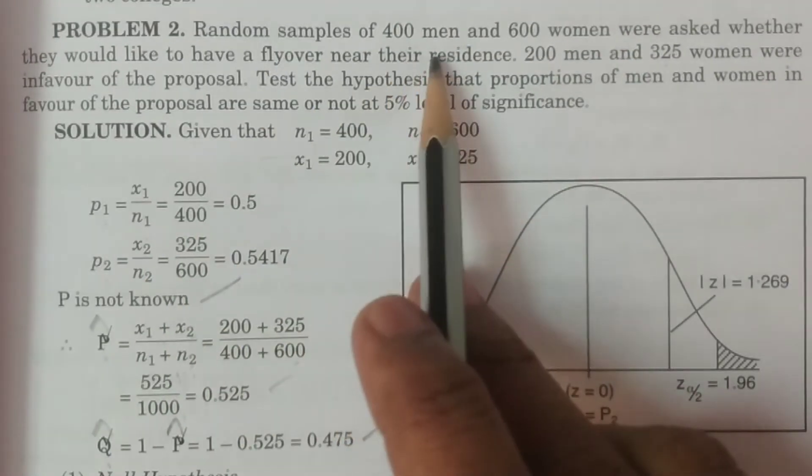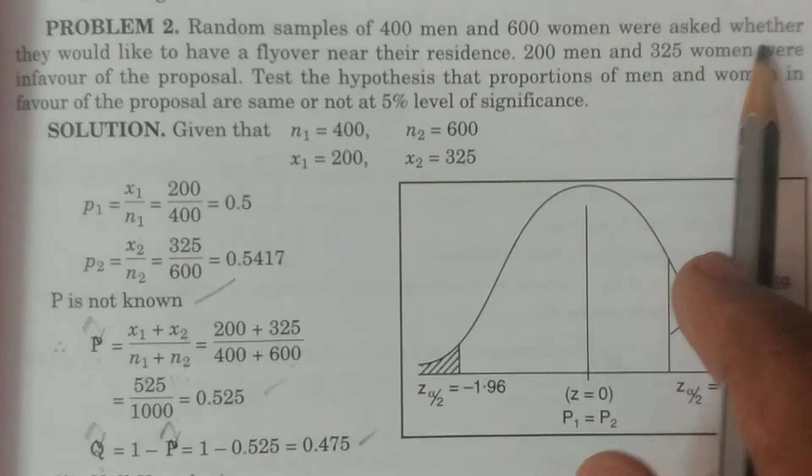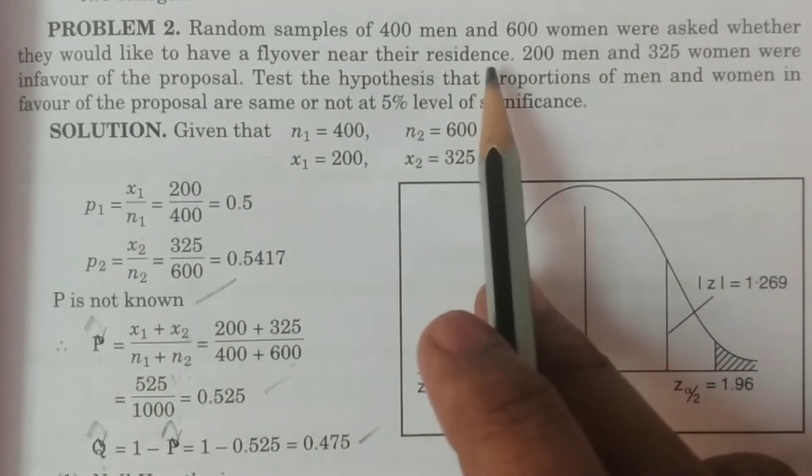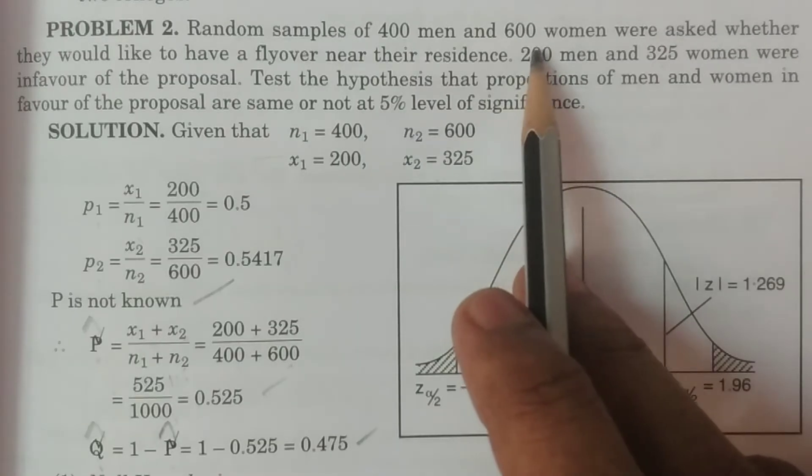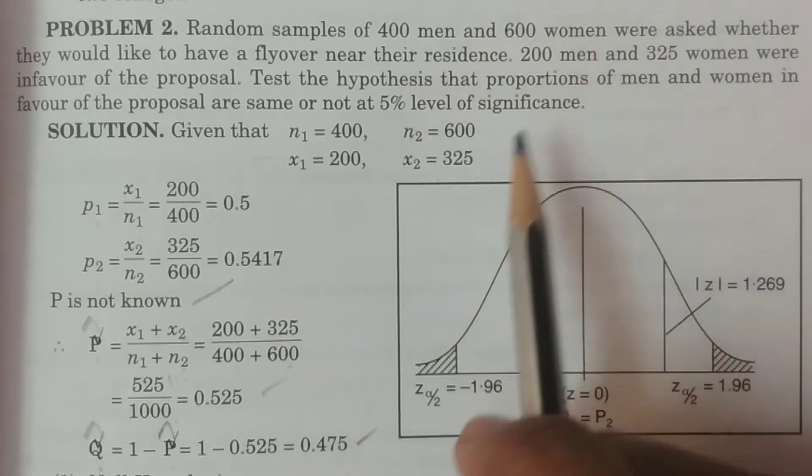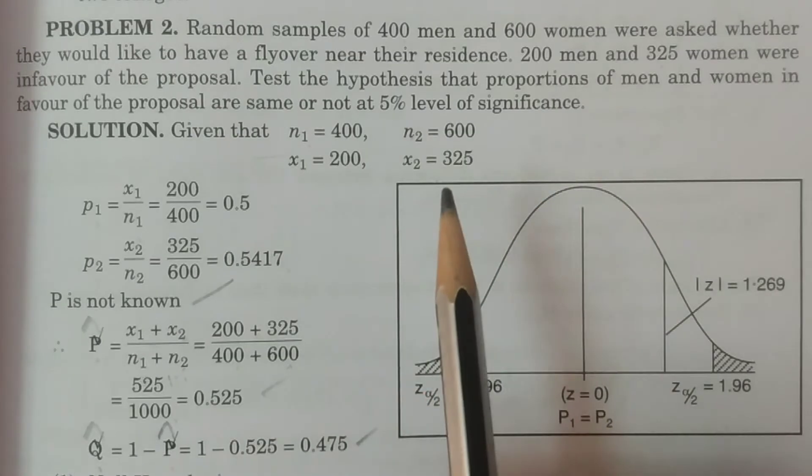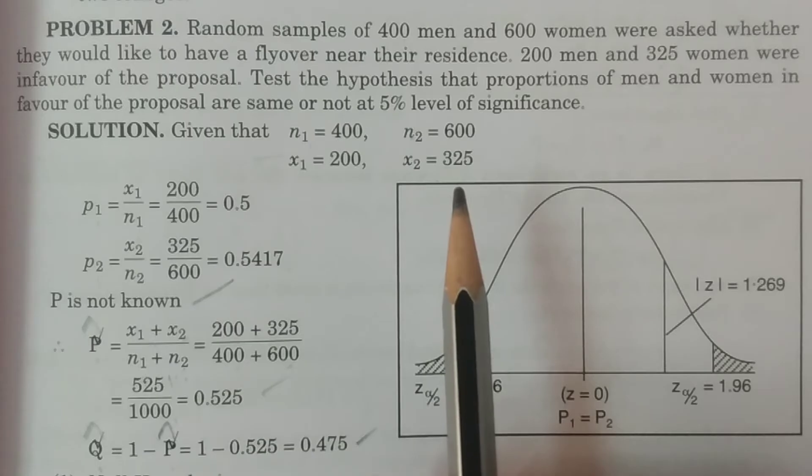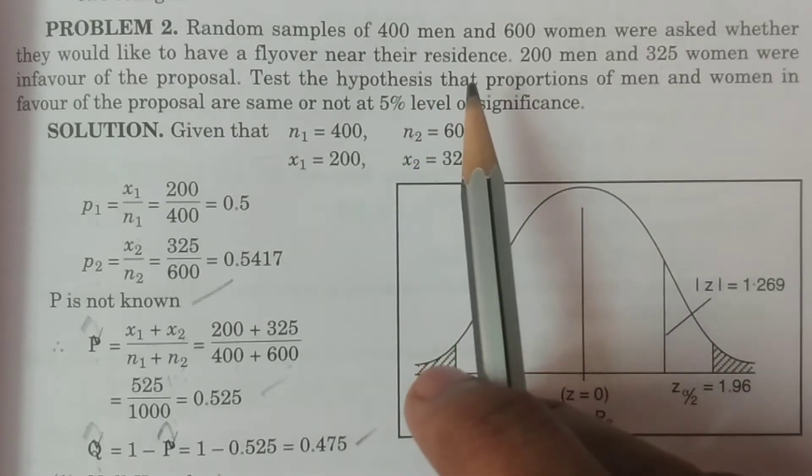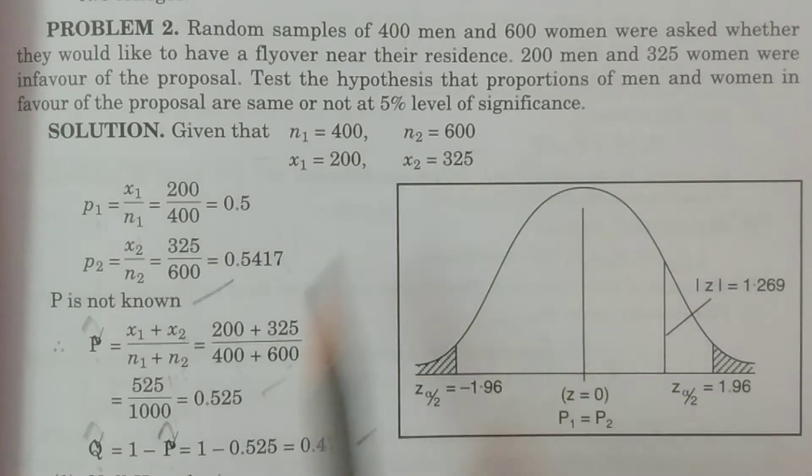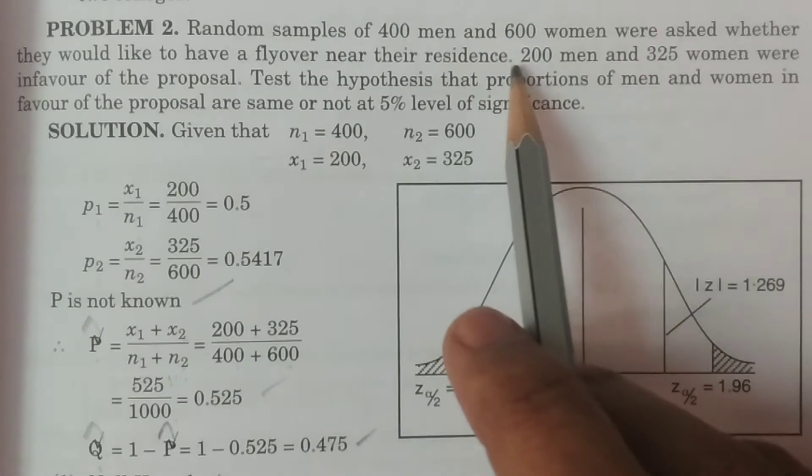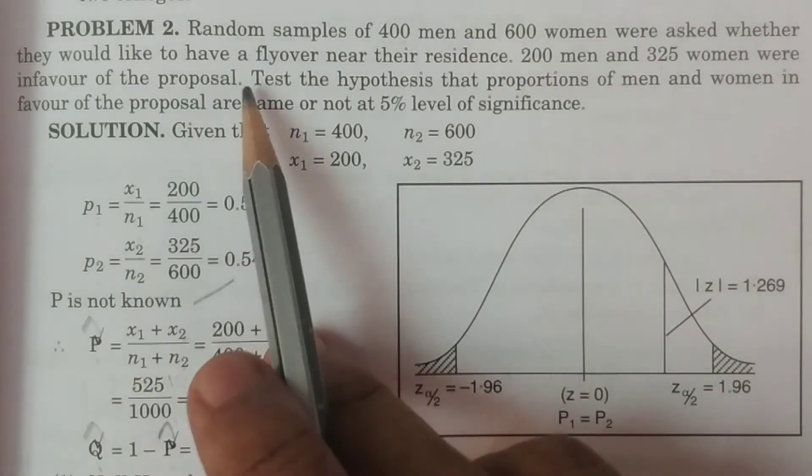Problem 2: Random samples of 400 men and 600 women were asked whether they would like to have a flyover near their residence. 200 men and 325 women were in favour of the proposal.